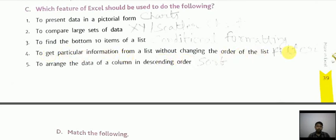To arrange the data of a column in descending order, to arrange in ascending or descending order we use the sort. So filter is used to filter the information, conditional formatting to find the bottom 10 items.